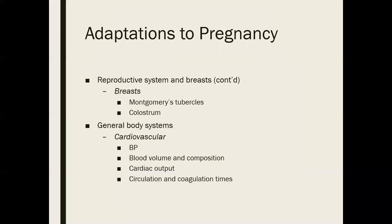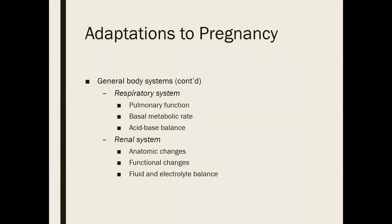Blood volume increases by about 1,500 mL during pregnancy — approximately 50% above non-pregnancy levels — largely caused by increases in plasma and red blood cells. This is to nourish the fetus and also as a physiological adaptation to prepare for potential blood loss during birth. It's a protective mechanism that helps to perfuse the baby and develop a reserve for labor and delivery.